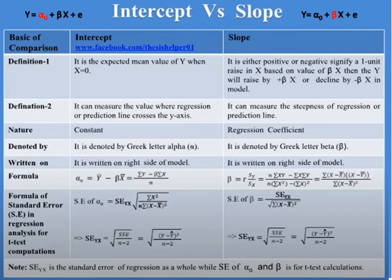Intercept is a constant whereas slope is a regression coefficient. Intercept is denoted by the Greek letter alpha, whereas slope is denoted by the Greek letter beta. Both intercept and slope are written on the right side of the model.